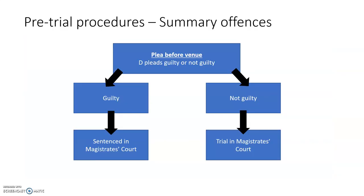In terms of pre-trial procedures — what happens before the trial — the first thing is plea before venue, and this always happens at the Magistrates' Court. We're going to deal with three scenarios: summary offences, triable either way offences, and indictable offences. For summary offences: the first stage is plea before venue, where the defendant is asked to plead guilty or not guilty. If they plead guilty, they will be sentenced in the Magistrates' Court. If they plead not guilty, they will have their trial in the Magistrates' Court and then will either be acquitted if found not guilty, or sentenced if found guilty.